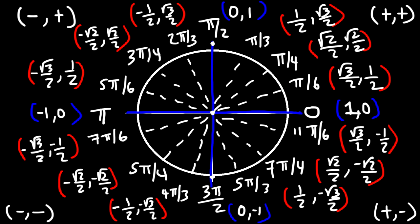To evaluate a tangent function, such as tangent of π/3, use the fact that tangent equals y over x, which is sine over cosine. Take the y-value √3/2 and divide by the x-value 1/2. Multiplying top and bottom by 2, the 2's cancel, giving √3/1, which is simply √3. That's how you evaluate a tangent function using the unit circle.